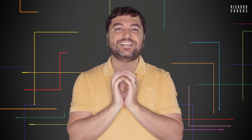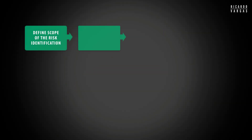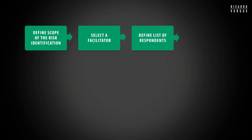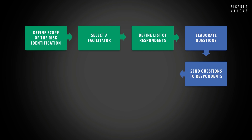Let's understand the process of Delphi. What you can see here is the Delphi process. The first thing you need to understand is the scope of the identification of risks — you need to narrow down and identify what risks you are trying to identify. The second step is to identify who will facilitate the process. The third is to identify who will participate. Then you create the questions, distribute them, receive the information, and compile the answers. Up to here, it's quite similar to an interview.